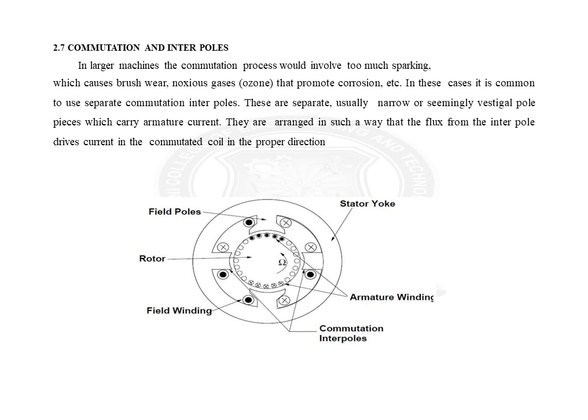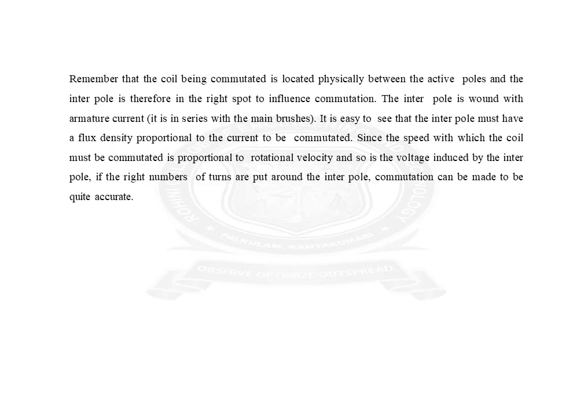The rotor carries a winding called the armature winding or armature coil. In between the stator poles, one more pole is inserted in the machine — that is called the commutation pole or interpole.